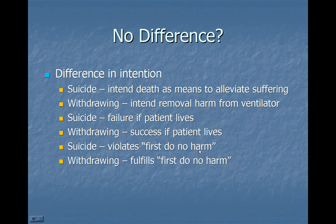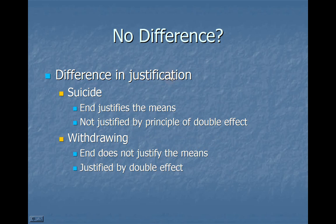In assisted suicide, you're arguably violating the first do-no-harm principle because you're harming the person — you're killing them. That's a harm people don't really want to do, but feel they have to in order to achieve the goal. So you're first doing harm in order to get to your goal. Whereas with withdrawing, you're fulfilling the do-no-harm principle, because your intention is to remove the harm caused by the treatment. So there are at least three reasons there's a difference in intention between assisted suicide and withdrawing life-sustaining treatment.